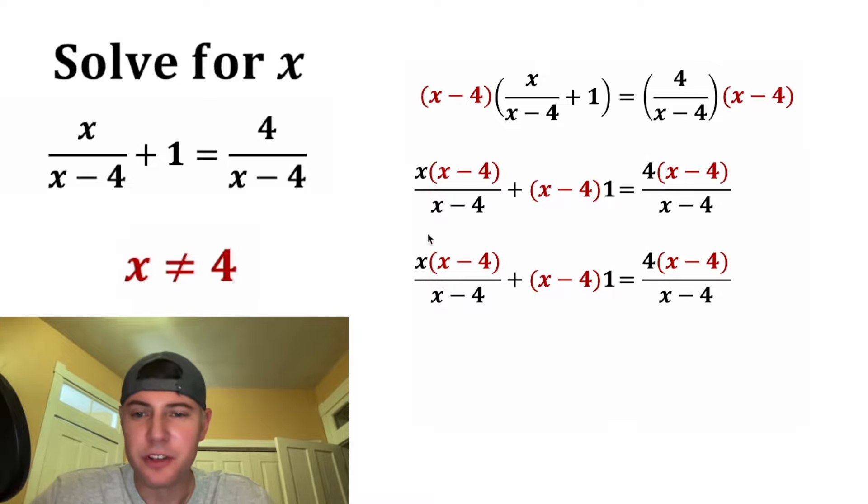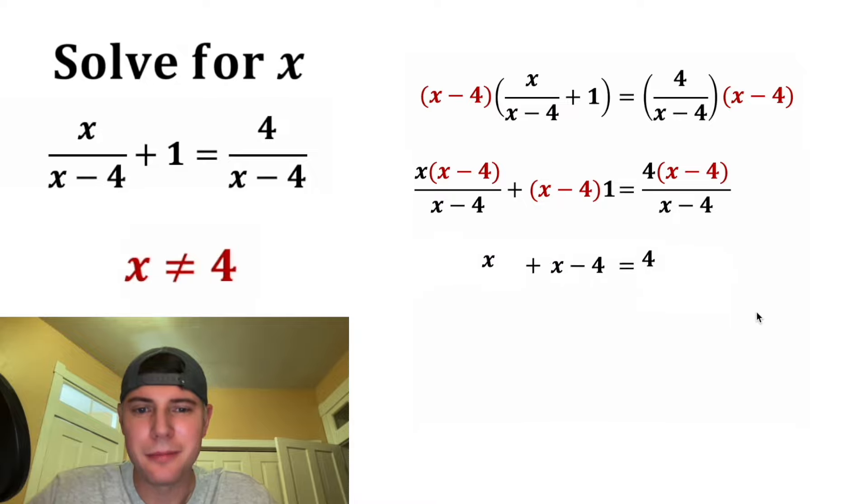So now we can simplify some things. For this first fraction or rational expression, we can divide away the x minus 4 from top and bottom. And then for this part, multiplying by 1 isn't doing anything. And then on the right-hand side, this x minus 4 can be divided from top and bottom. So we now have x plus x minus 4 equals 4.